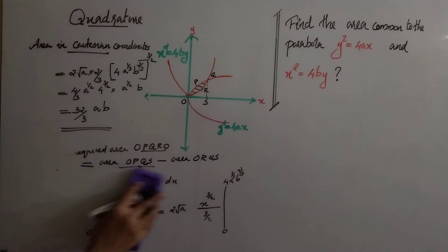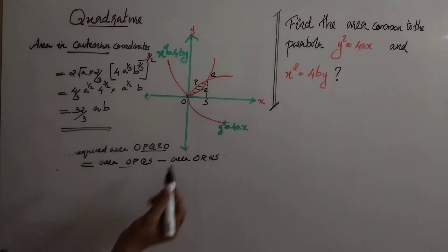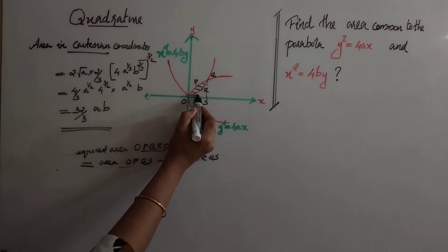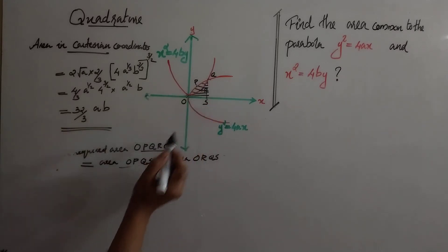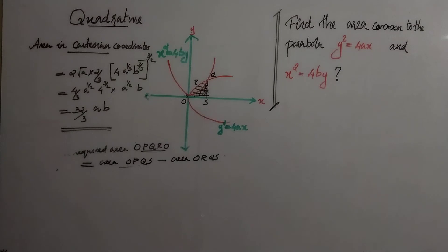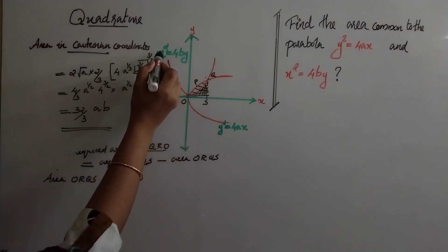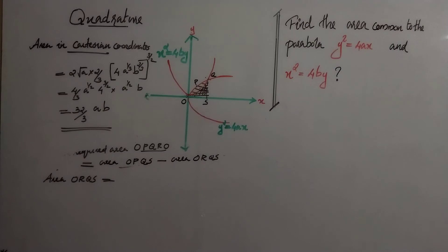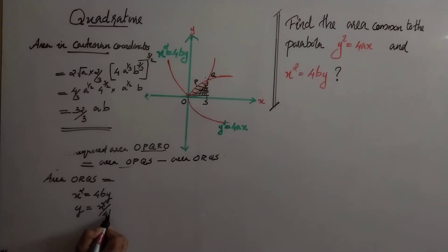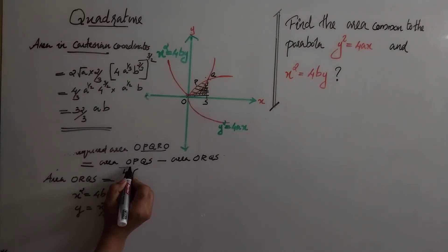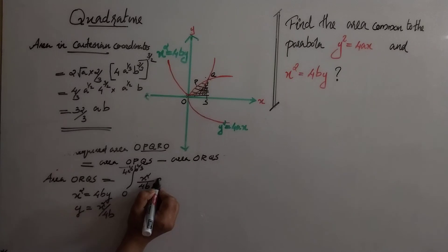Next we find the area ORQS. For this region, the curve is x² = 4by, so y = x²/4b. The limits of integration vary from 0 to 4a^(1/3)·b^(2/3), and the integral is ∫₀^(4a^(1/3)b^(2/3)) (x²/4b) dx.